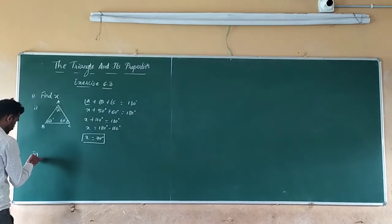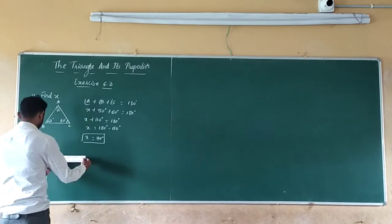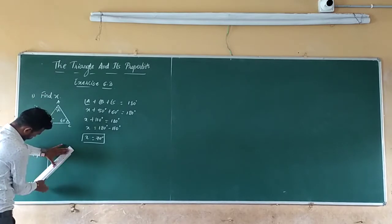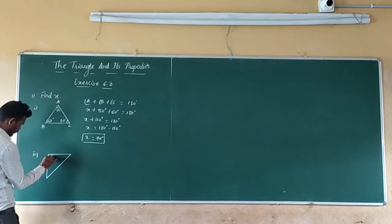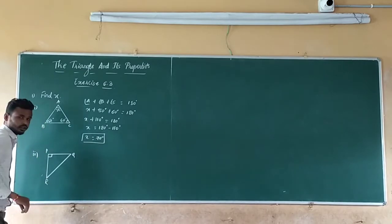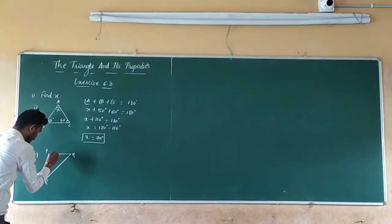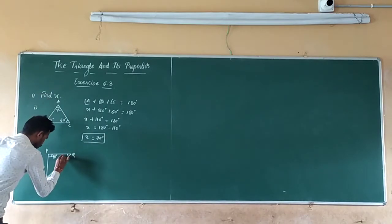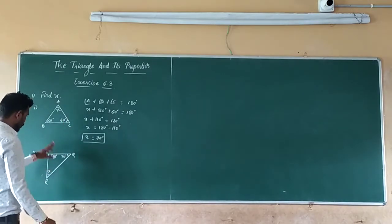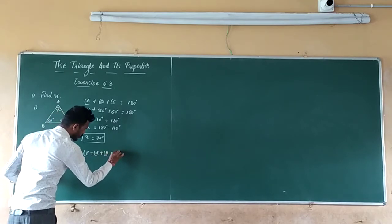Next, second one. Triangle PQR. Angle P is 90 degrees, angle Q is 30 degrees, and angle R is X. So use the angle sum property of a triangle. The sum of all the angles will be 180 degrees. That is, angle P plus angle Q plus angle R is equal to 180 degrees.